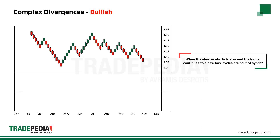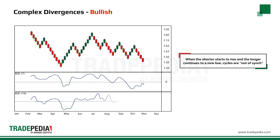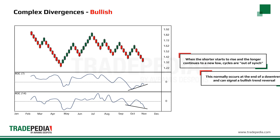When a shorter period indicator bottoms and starts to rise towards zero, while the longer continues lower to new lows, the two cycles are out of sync. This normally occurs at the end of a downtrend and can sometimes signal a bullish trend reversal.